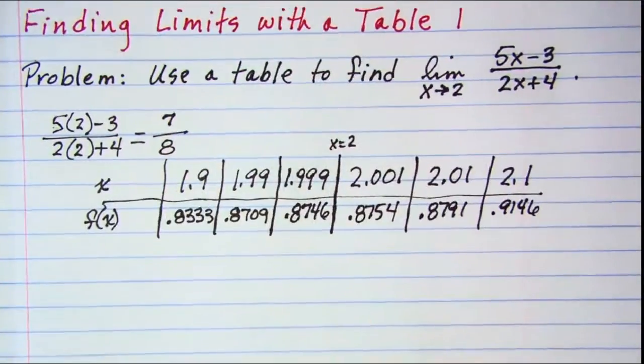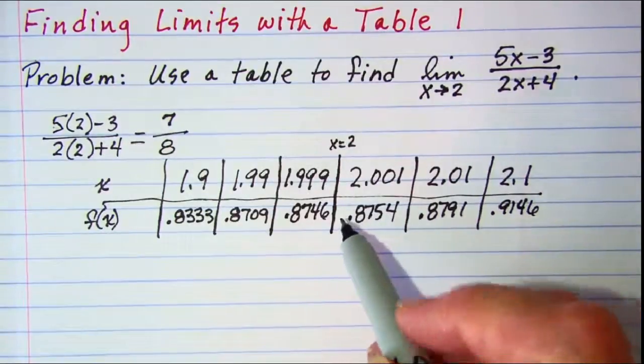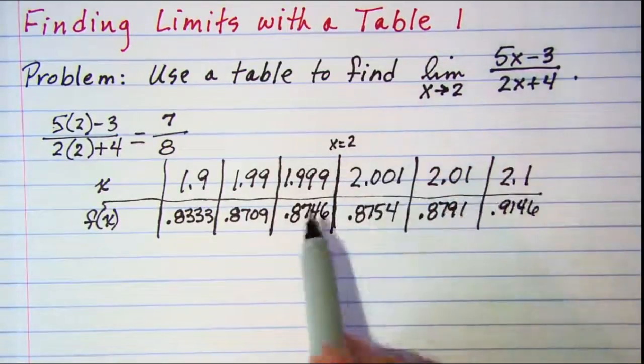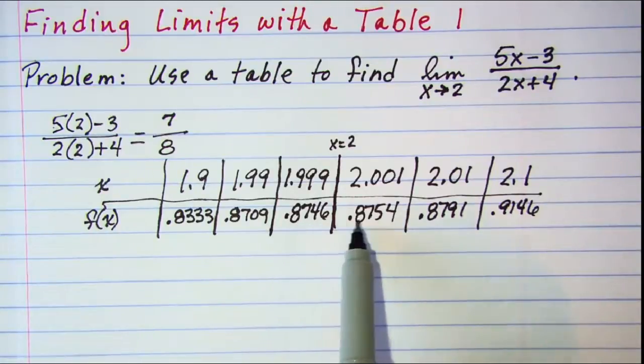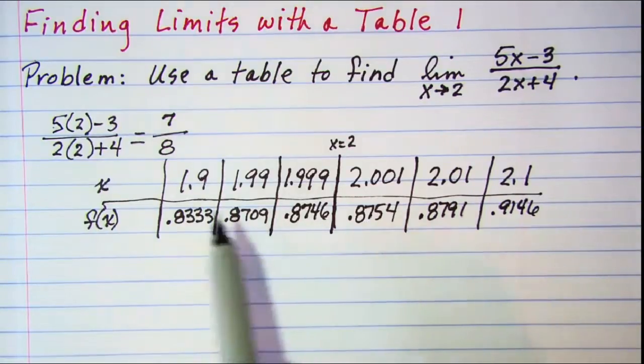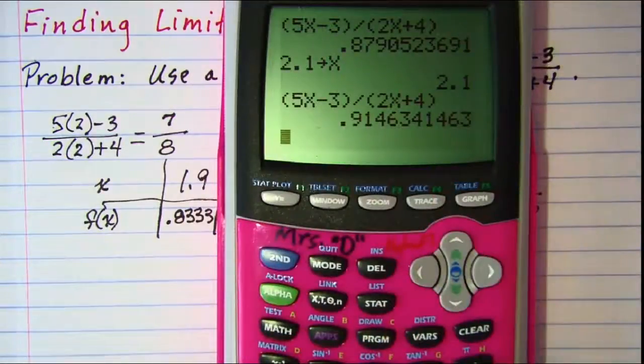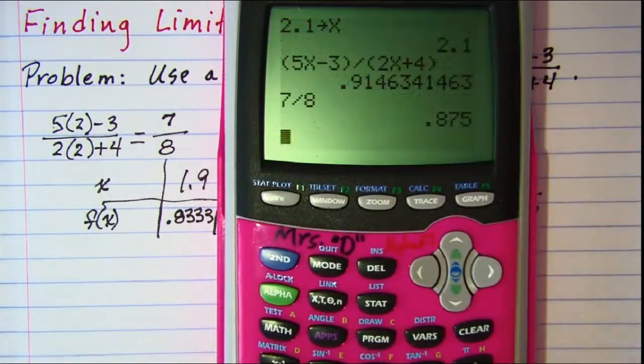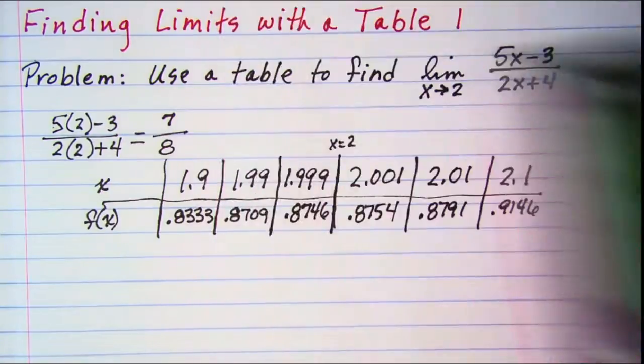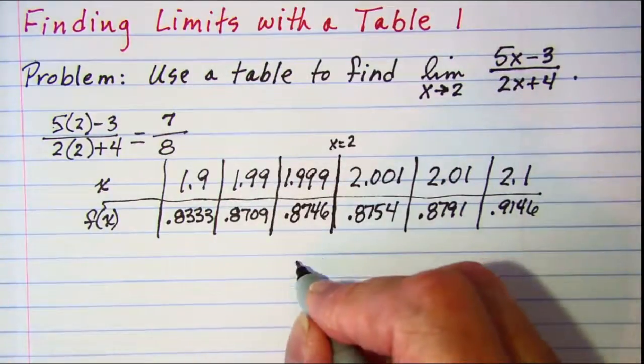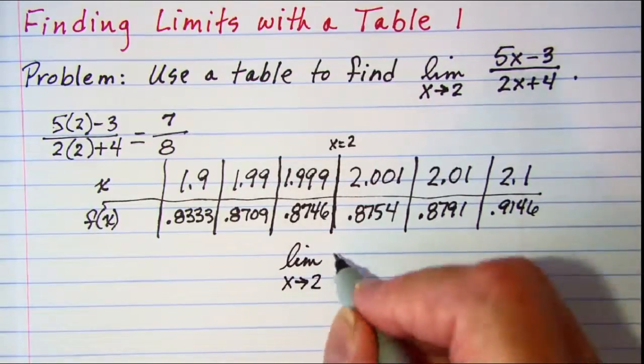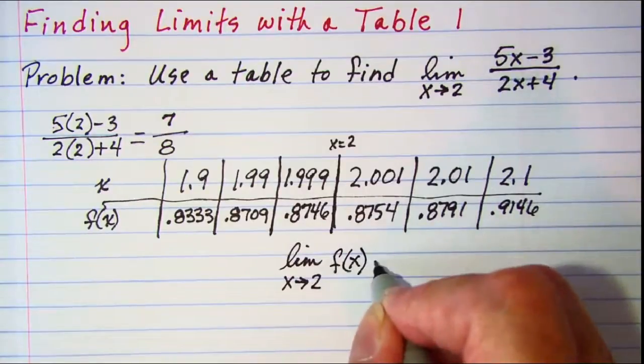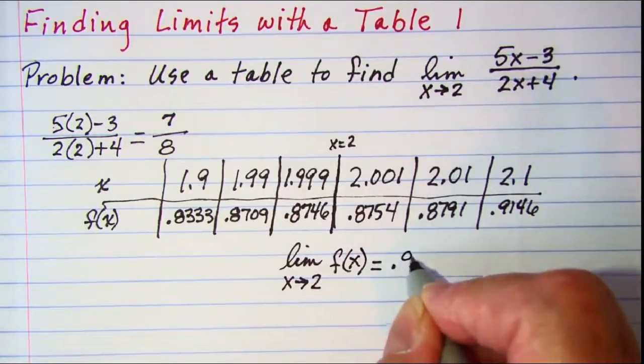So as x approaches 2, which is right here, I can see that my value for f of x or my y value is approaching 0.875. Now 7/8, we can calculate that. The decimal for that is 0.875, so the limit as x approaches 2 of this function is 0.875.